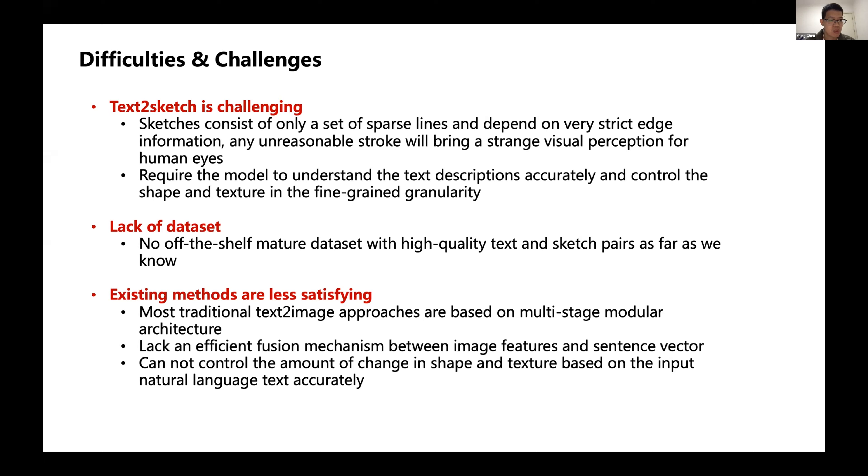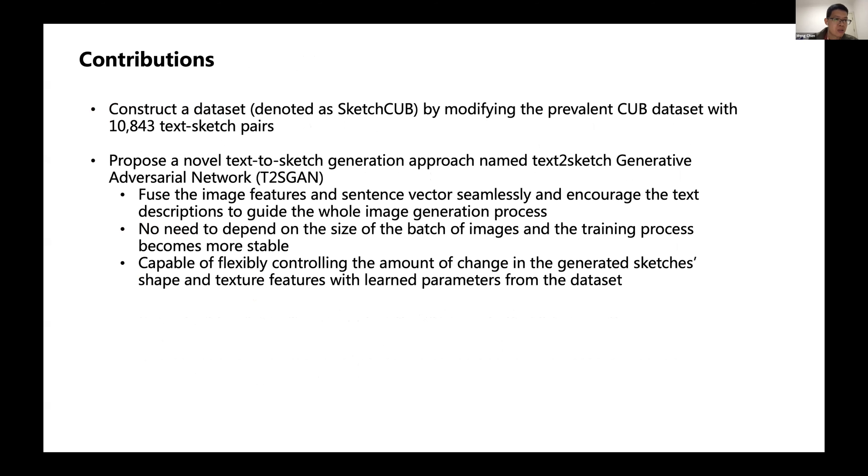The last challenge is that existing models are less satisfied on this task, because most traditional text-to-image approaches are based on multi-stage modular architecture and lack efficient fusion mechanisms between image features and sentence vectors. So they cannot control the amount of change in shape and texture based on input natural language accurately.